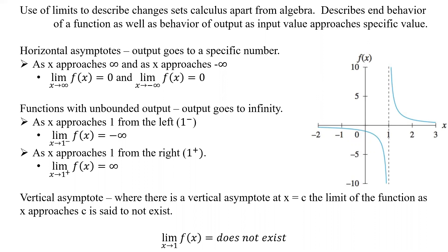That's really what sets us apart from algebra. Limits describe the behavior of a function — the behavior of the output as the input value approaches a specific value. Horizontal asymptotes basically mean the output goes to a specific number.